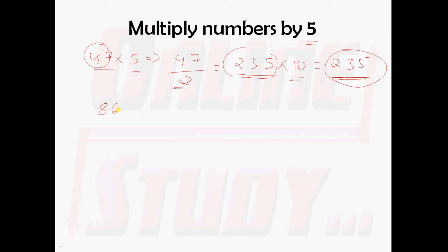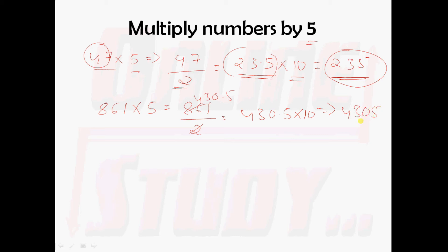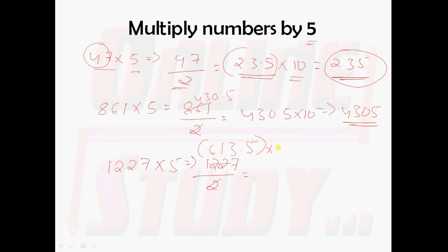We shall take the example of 861 into 5. First divide 861 by 2, you get 430.5. We shall also take 1227 into 5. Divide 1227 by 2: you get 613.5. And this 613.5 should be multiplied with 10, giving you 6135. So 1227 into 5 is 6135.